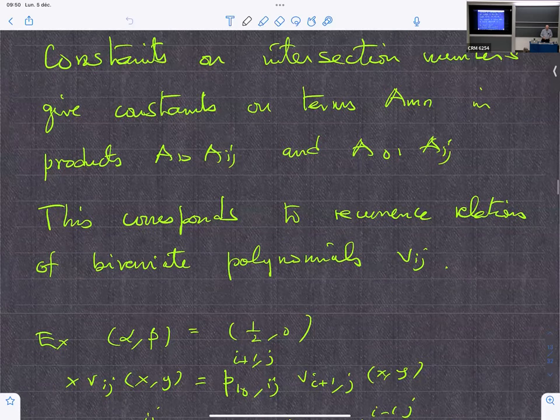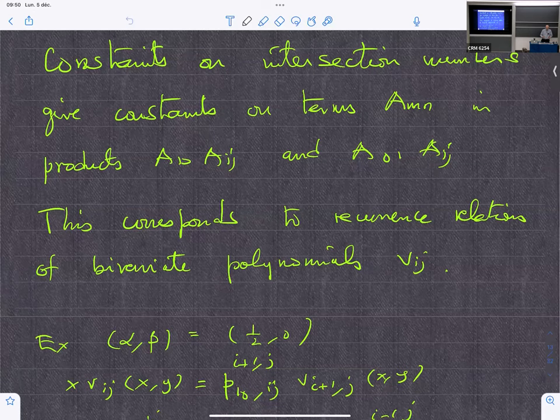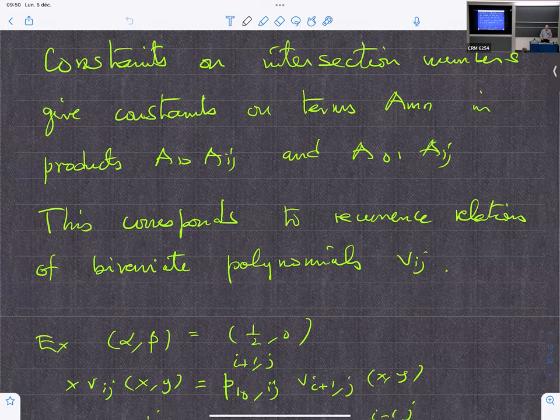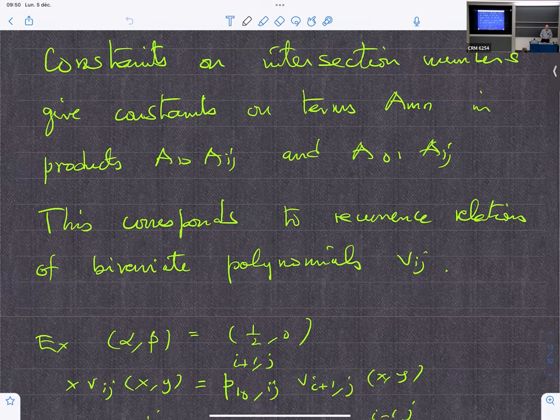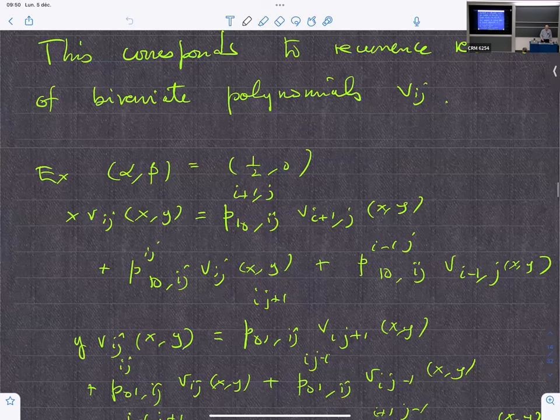And so you have a three-term recurrence in one variable and a three-term in the other variable. But once you start modifying the parameters, you see that you will have recurrence relations that will be higher order.